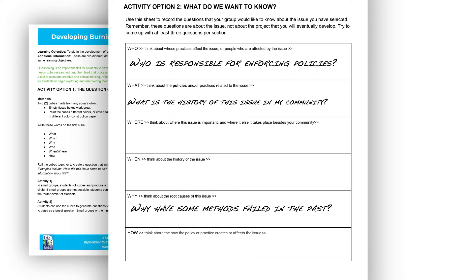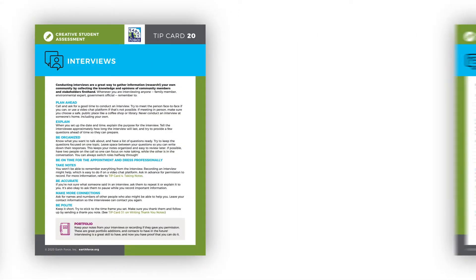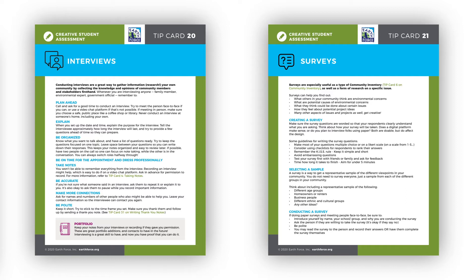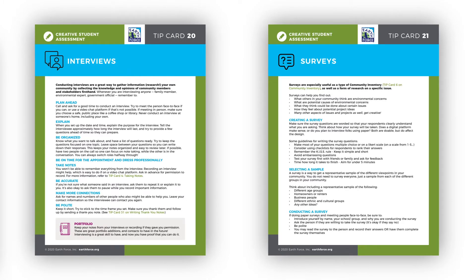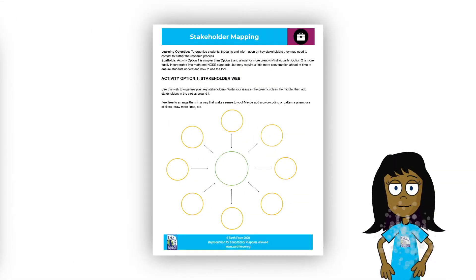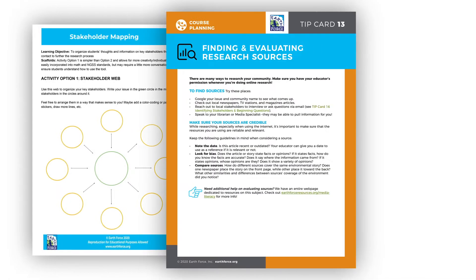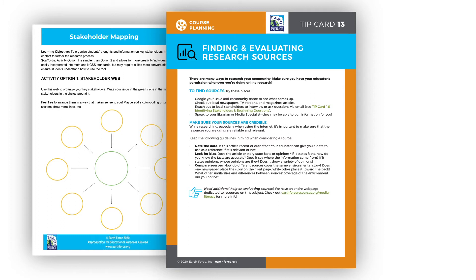Now that everyone knows what questions they want to ask, search for the needed information by working together to engage stakeholders, conduct interviews and surveys, host a panel discussion, and safely scour the internet. As students identify and speak to stakeholders, they can keep track of their information by using a stakeholder web. Using a variety of methods ensures that you get a well-rounded picture of your issue.